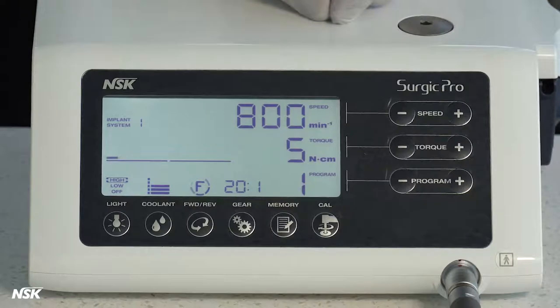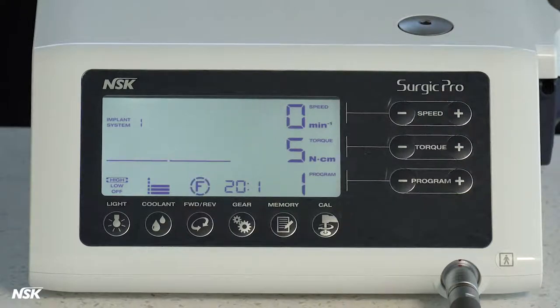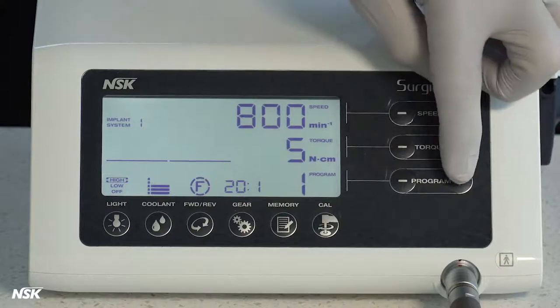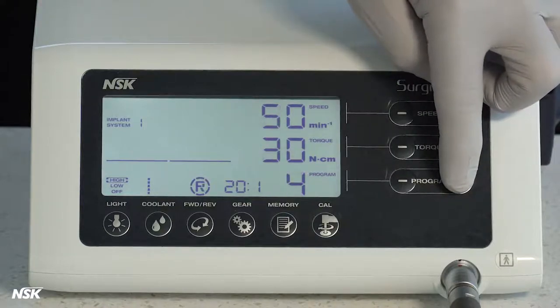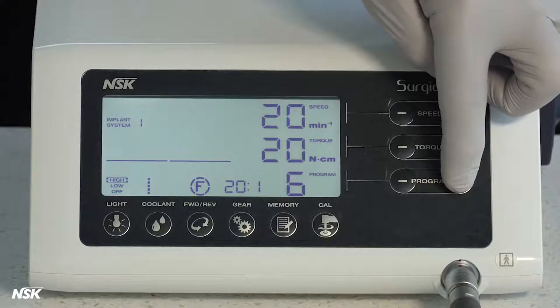Torque buttons are used to change or set the torque values between 5 and 80 Newton centimeters for implant attachments. You will notice the amount of bone resistance applied to the drill is displayed here like a graph during operation. Program buttons will select any of eight programs in each of eight implant systems.